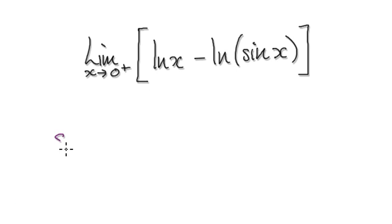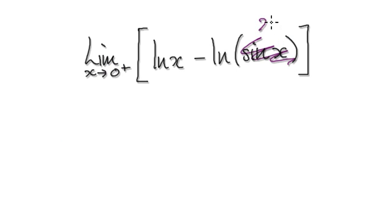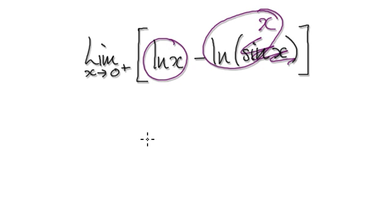OK, so to do this, remember, sin x is approximately x near x equals 0. So as you approach 0, you can consider sin x as x. You can consider this whole thing here as x. So now you've got natural log take away natural log, so the limit here is actually 0.